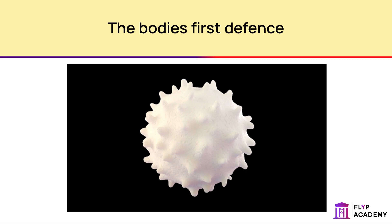All of these defences help to prevent the entry of a pathogen into the body. However, sometimes pathogens do get past. Once they are inside the body, a pathogen causes an immune response from the body. This is the activation of the immune system. The immune system includes the white blood cells. There are different types of white blood cells that respond to pathogens in different ways.